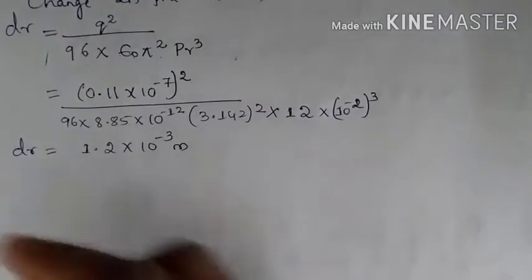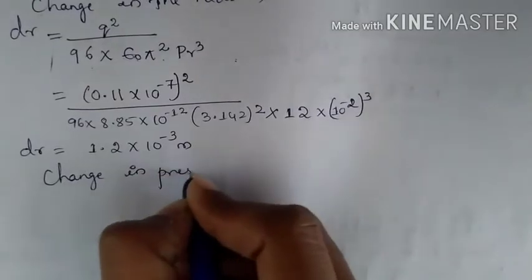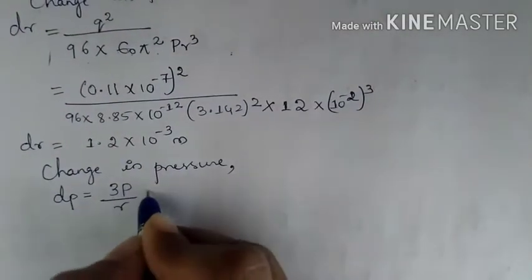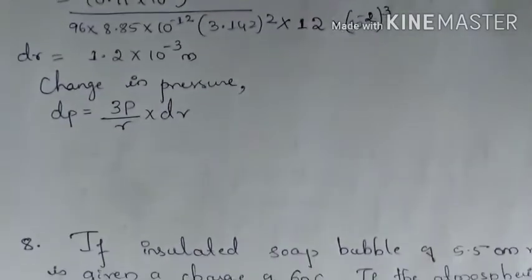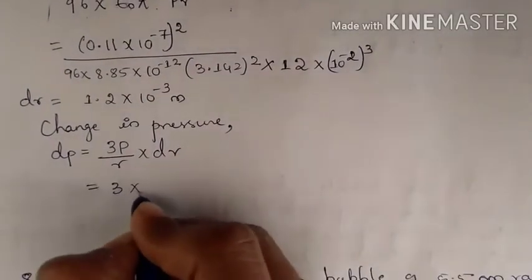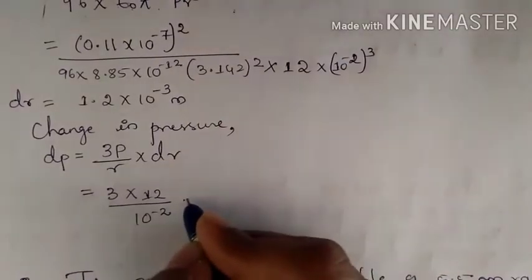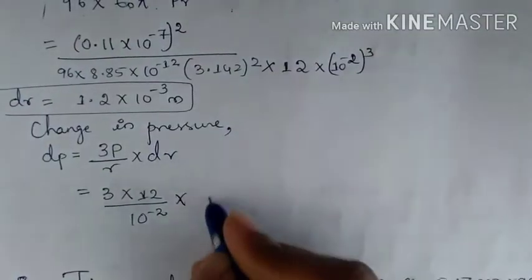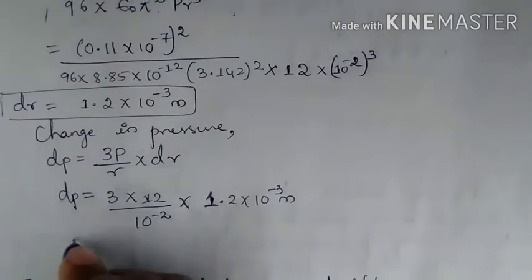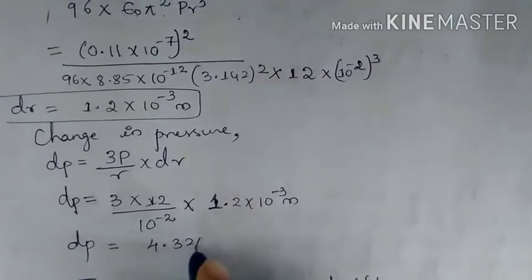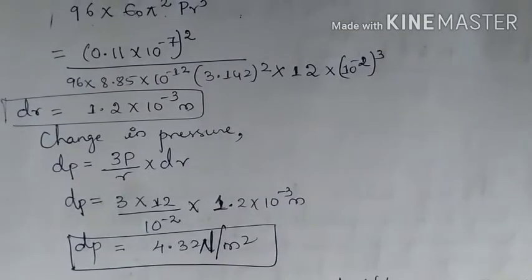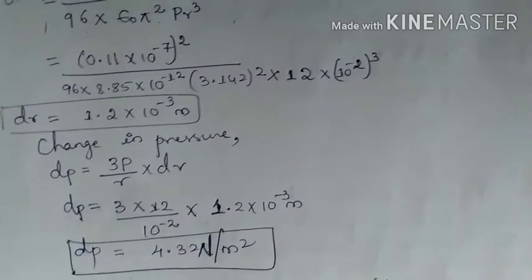Next we find the change in pressure using dp = (3P/R) × dr. Substituting: dp = (3 × 12)/(10⁻²) × (1.2 × 10⁻³). Solving gives dp = 4.32 Newton per meter square.